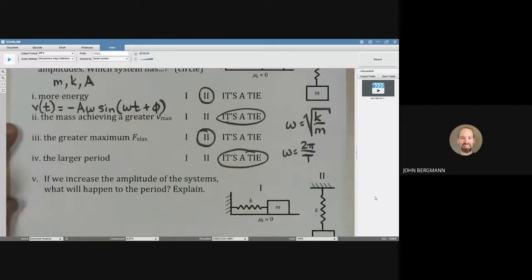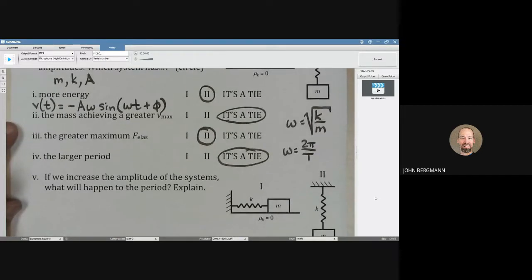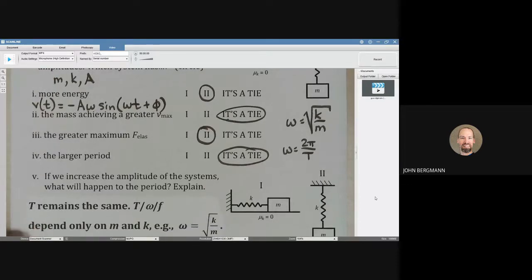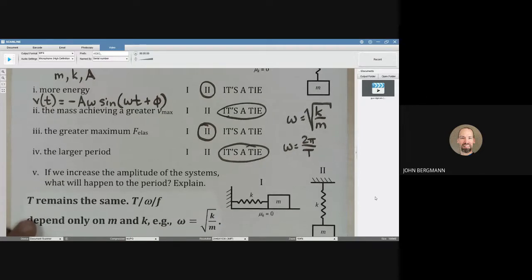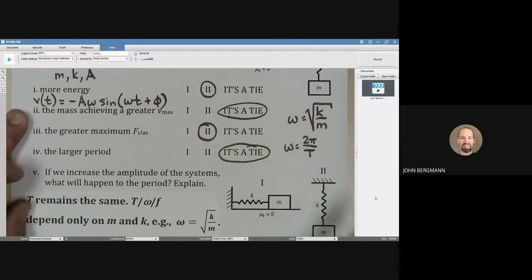If we increase the amplitude of the systems, what's going to happen to the period? It's going to remain the same. In fact, T and omega and the frequency, omega is the angular frequency, F is the frequency, they depend only on M and K. And we talked about that. The period and the frequency are related to that. So if we increase the amplitude, the period is going to stay the same. The energy is going to change, but the period will stay the same.